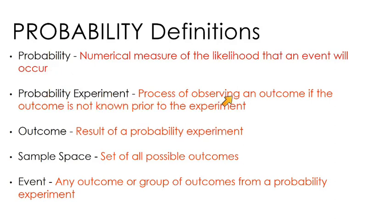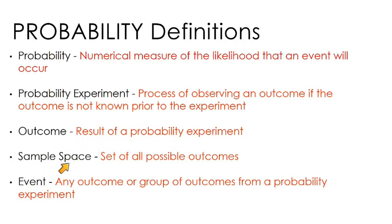A probability experiment is the process of observing an outcome if you did not know the outcome prior to the experiment. The outcome is the result of a probability experiment — we're going to see how many outcomes there are in a situation. The sample space is the set of all possible outcomes; for a coin flip that would be heads and tails. And your event is any outcome or group of outcomes from a probability experiment.